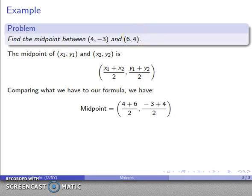And I'll substitute those in. And at this point, I have an arithmetic expression. I can evaluate 4 plus 6 is 10 over 2, negative 3 plus 4 is 1 over 2, and I'll do a little bit of simplification there. That's going to be 5, 1 half is my midpoint.